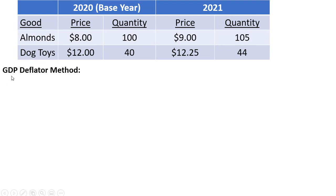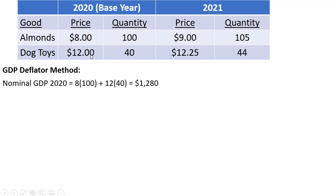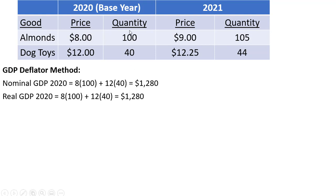Let's first calculate the inflation rate using the GDP deflator. We're going to first calculate nominal GDP in 2020. Nominal GDP in 2020 is the output valued at current dollars: 8 times 100 plus 12 times 40, giving us 1,280. For real GDP in 2020, we multiply our output in 2020 by base year prices — which are also 2020 prices — so we get the same calculation: 8 times 100 plus 12 times 40, again equaling 1,280.